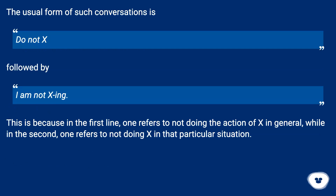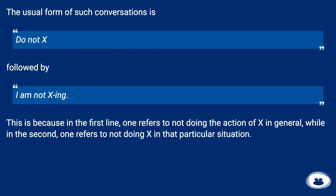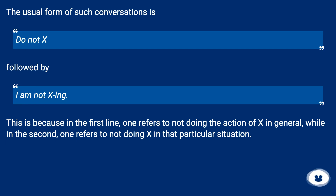The usual form of such conversations is 'Do not X,' followed by 'I am not X-ing.' This is because in the first line, one refers to not doing the action of X in general, while in the second, one refers to not doing X in that particular situation.